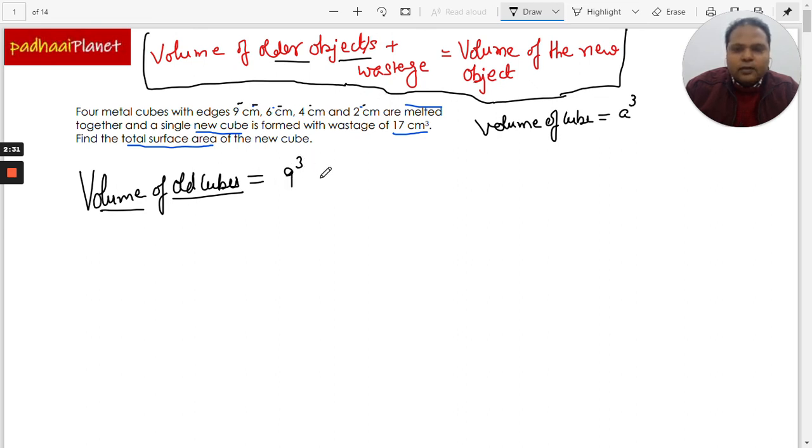So we can simply find it out. This is how I'm going to write because we will have to do the sum also, we will have to do the addition of all these four volumes. So I'm writing it here so that easily we can find that out.